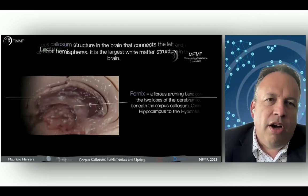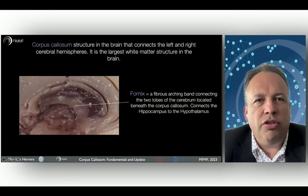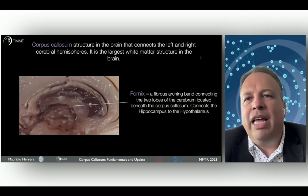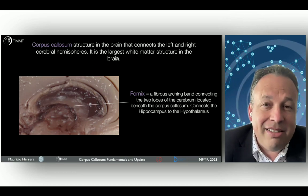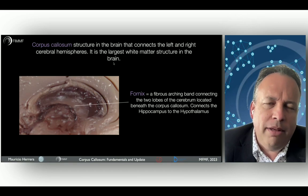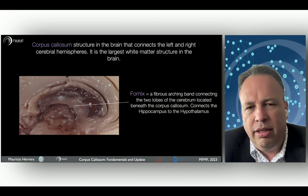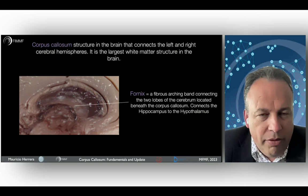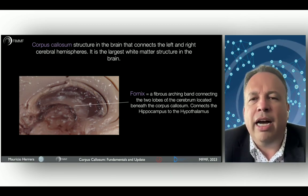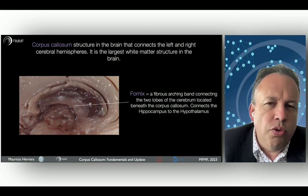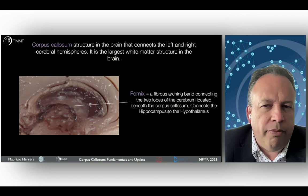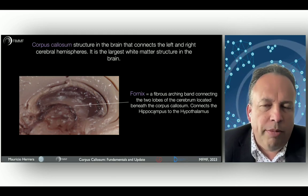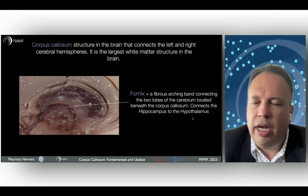What about the function of the corpus callosum? It is a structure in the brain that connects the left and the right cerebral hemispheres and is the largest white matter structure in the brain, and it is the most important commissure in the fetal brain. The fornix is below the body of the corpus callosum — a fibrous arching band connecting the two lobes of the cerebrum — and it connects the hippocampus and the hypothalamus.